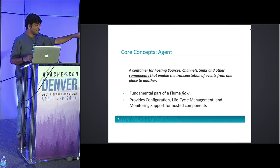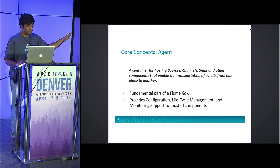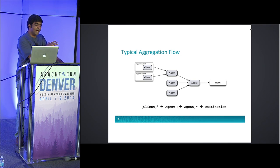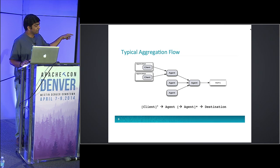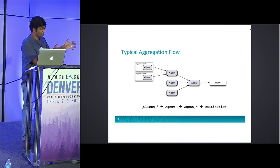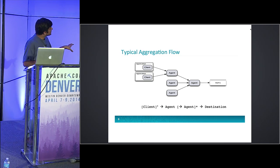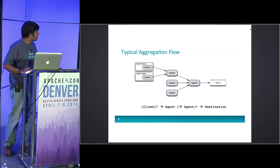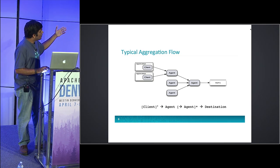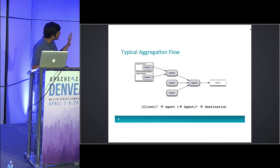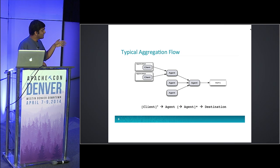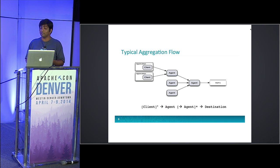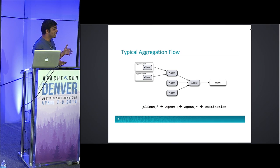The top three components are sources, channels, and sinks. This is sort of how you would aggregate your flows. You have your application with clients writing to the first set of Flume agents, then writing to a second set of Flume agents, finally going to HDFS. Why do you need multiple sets? You don't want a whole lot of Flume agents writing to HDFS — the whole point was to minimize the number of machines writing to HDFS.